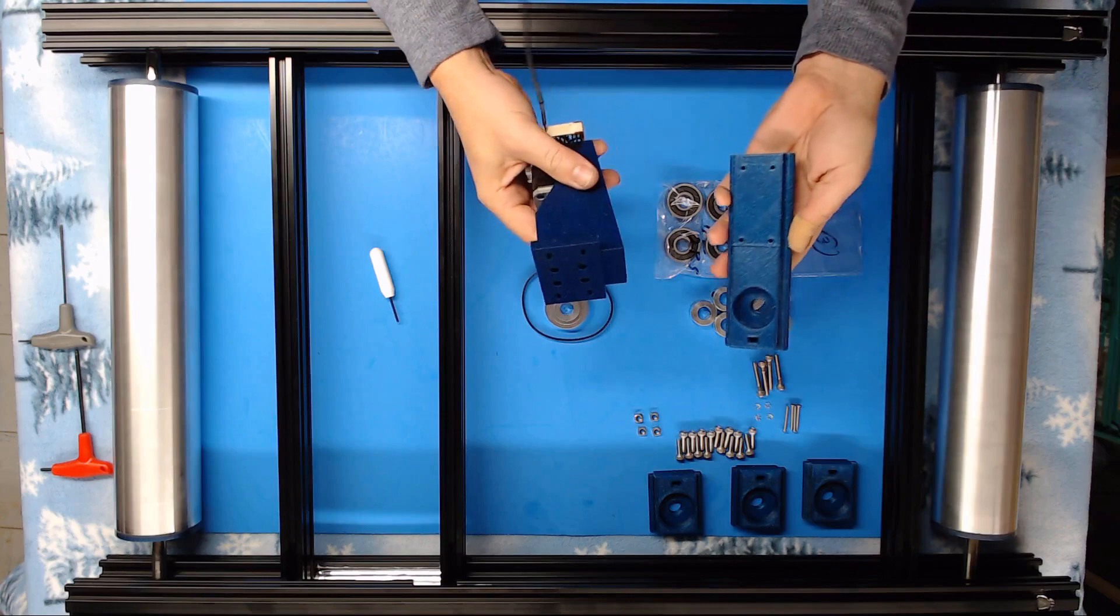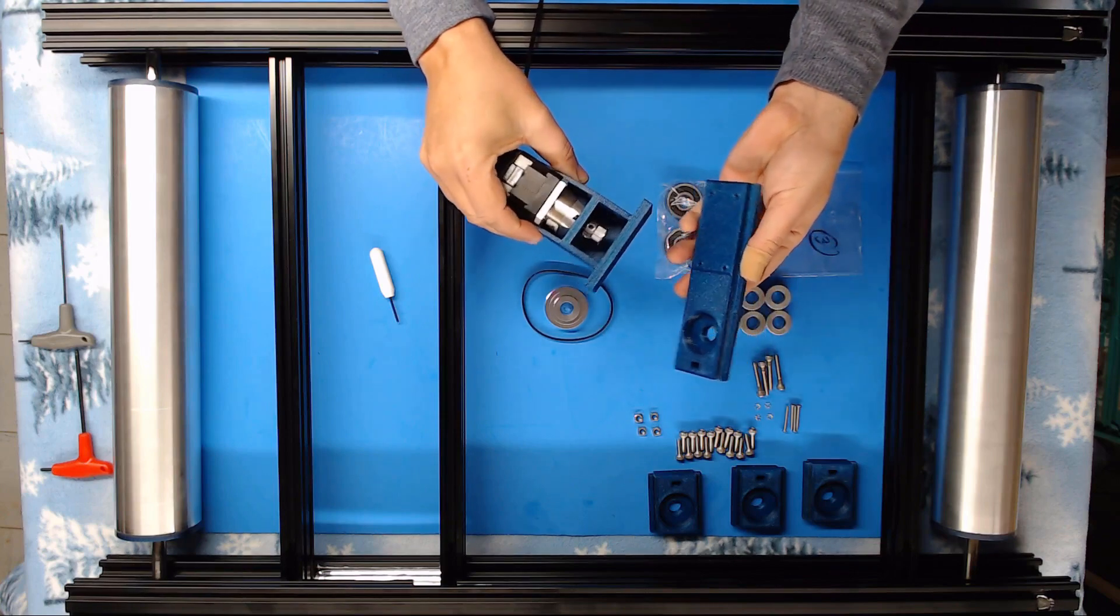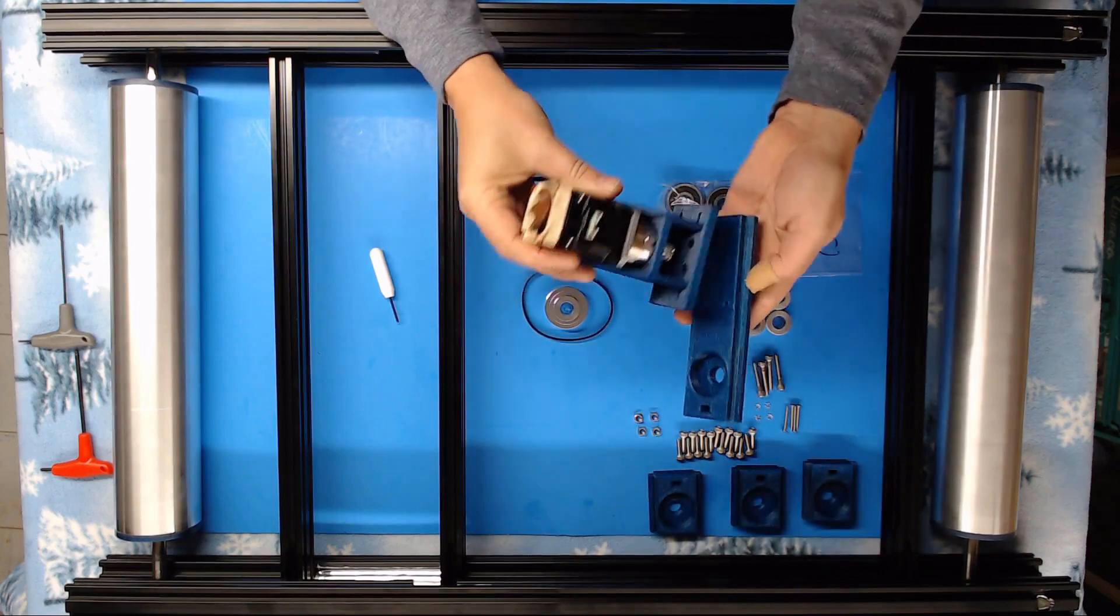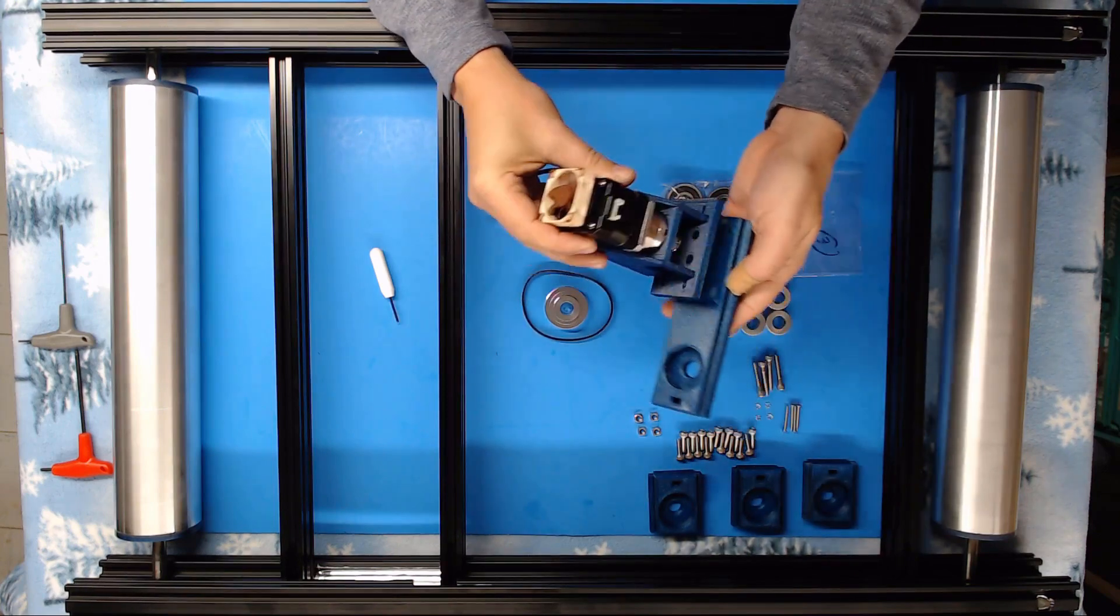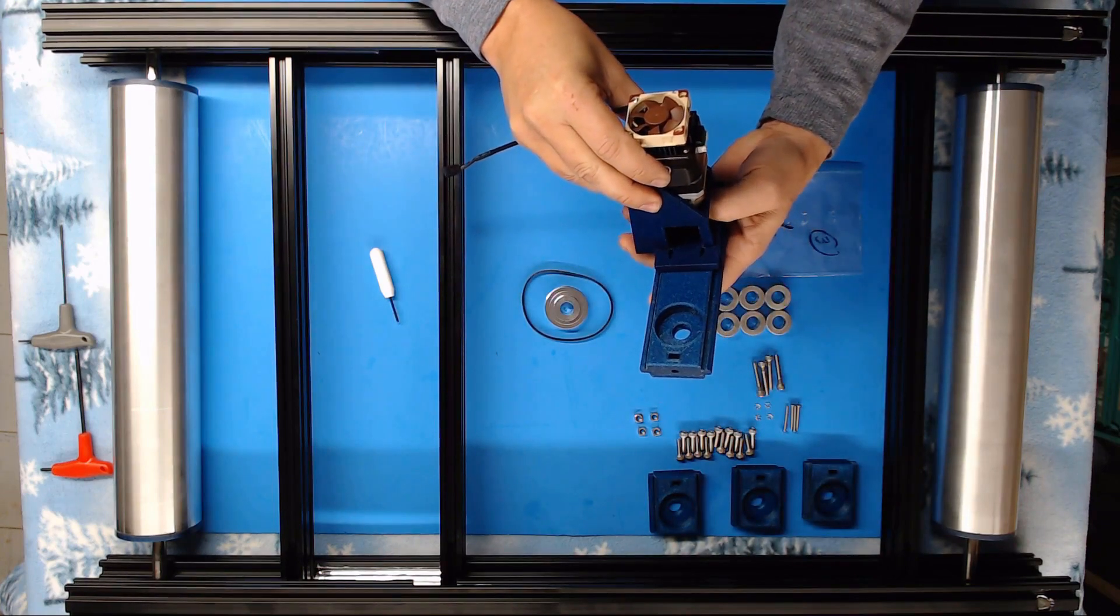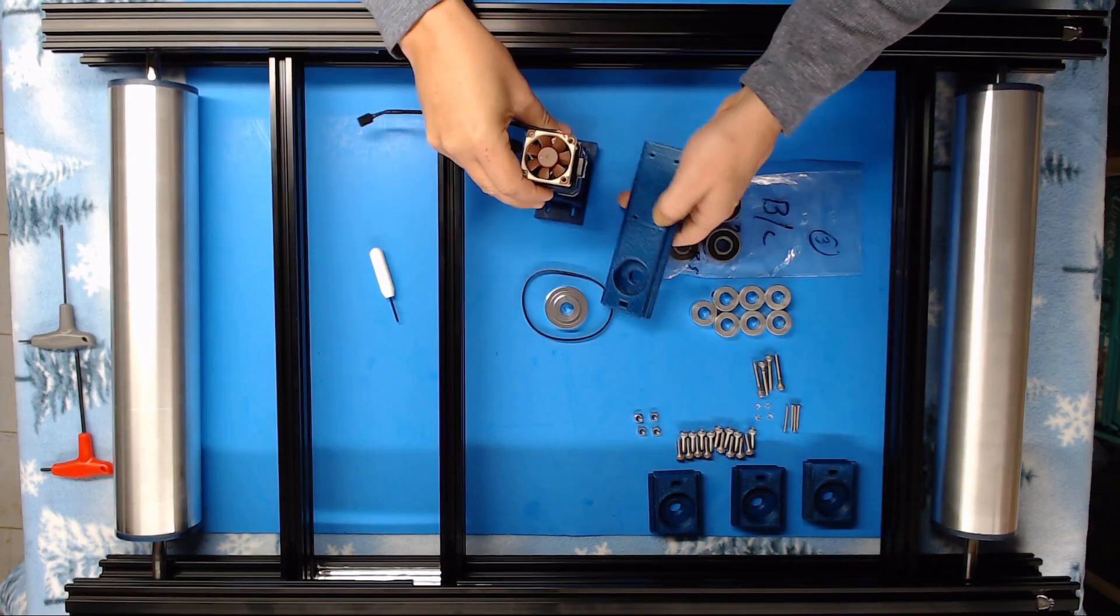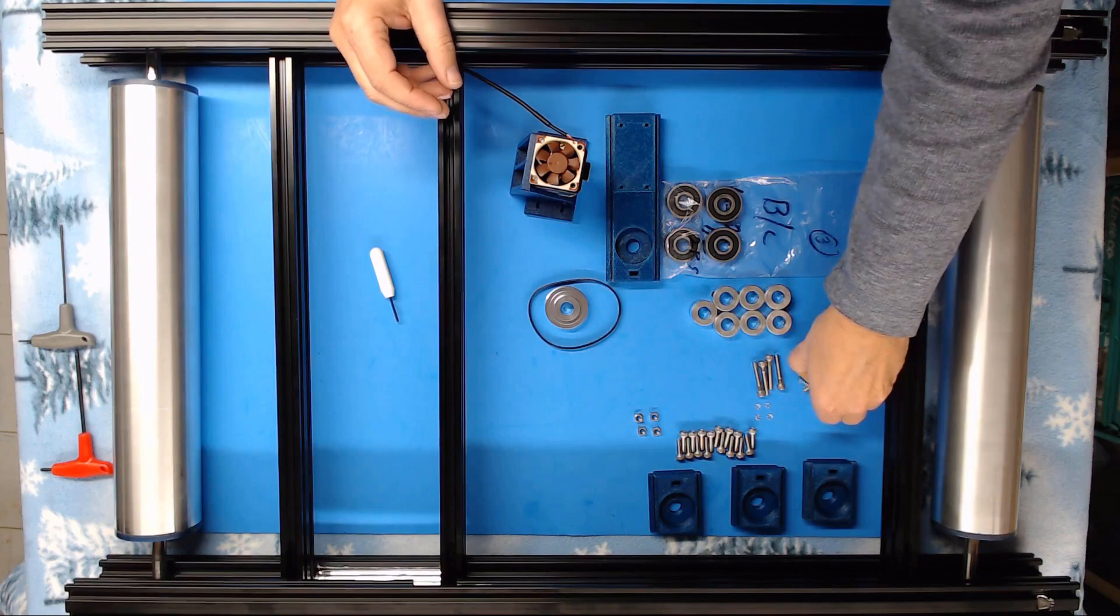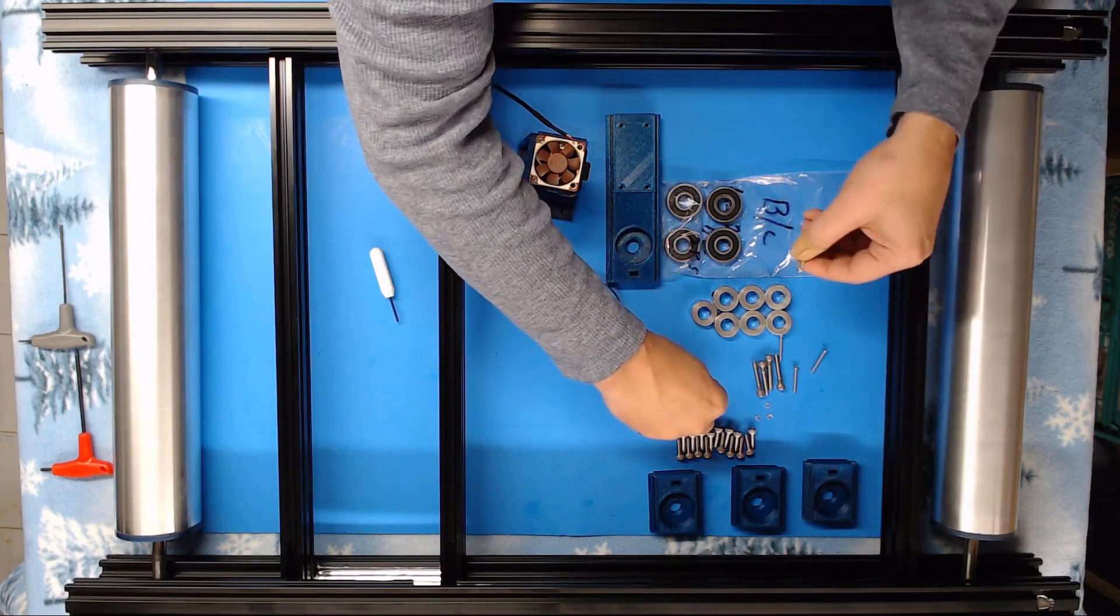What we're going to do now is attach our stepper to our slide mount for the bearings. You're going to need these four metric three by 25 millimeter screws and the four star washers.